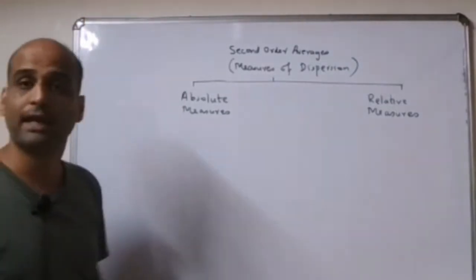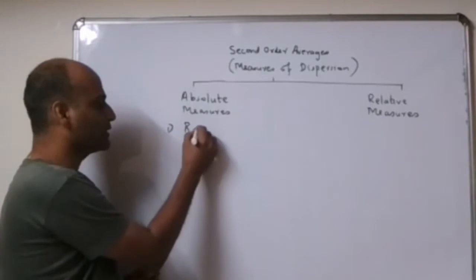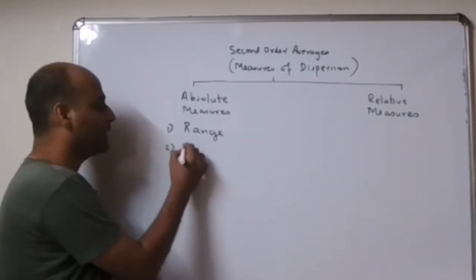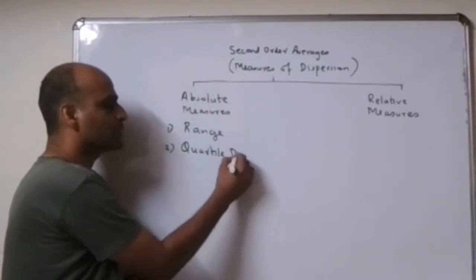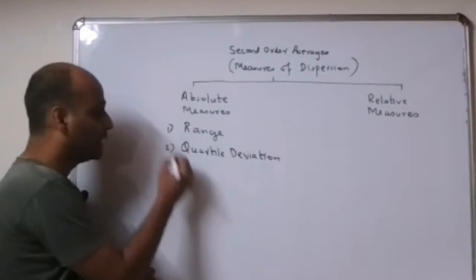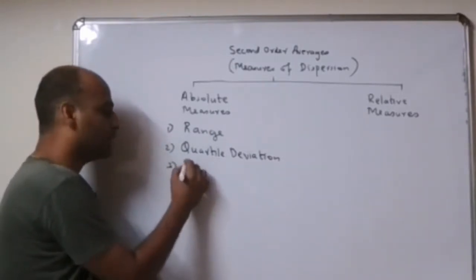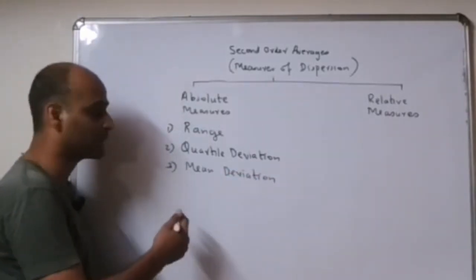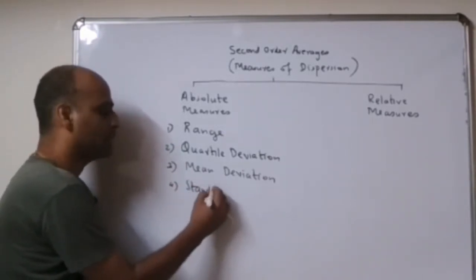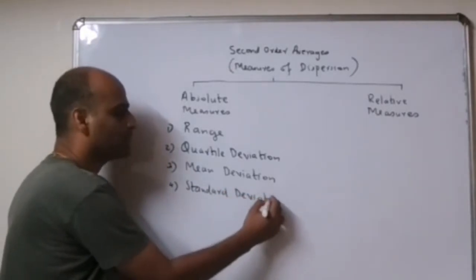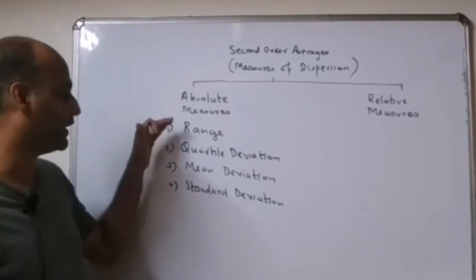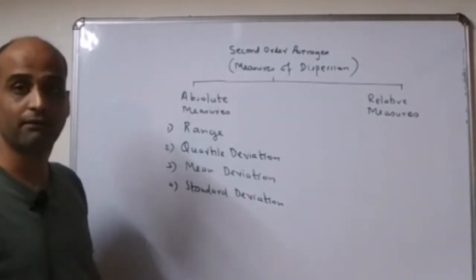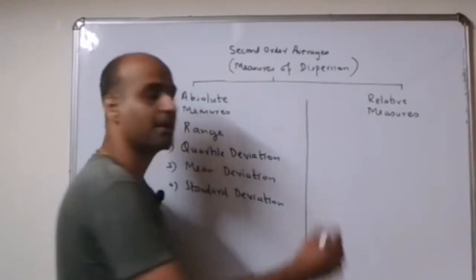Now let us look at which are the absolute measures. The first one is the range. The second absolute measure is the quartile deviation. The third absolute measure is the mean deviation. And the fourth is the standard deviation. So you have range, QD (quartile deviation), MD (mean deviation), and SD (standard deviation).